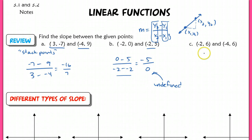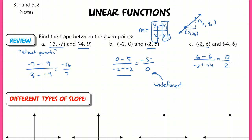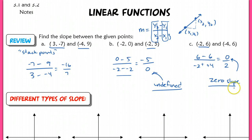In example C, it's slightly different. Select the point, put it on top, stack negative 2 underneath, then put 6 on top and negative 4 below, subtract in between. I get 0 on top and positive 2 on the bottom. Any time you have a 0 in the numerator, this has zero slope — that's actually 0, as opposed to undefined. When the numerator is 0, it's just zero slope. When the denominator is 0, we cannot divide by 0, so it becomes undefined.